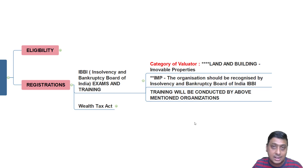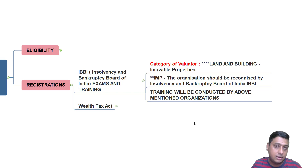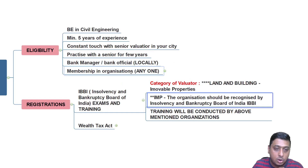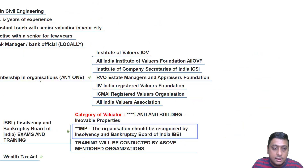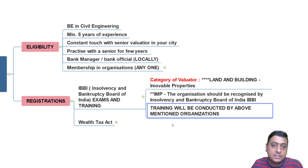There are other immovable properties like agricultural land, but you cannot do agricultural land valuation — there are certain other criteria you have to fulfill for that. So primarily we understand land and building valuation as a valuator. The organization should be recognized — as I told you, the membership organization should be recognized by IBBI. You can go to the link in the description to check whether it has been recognized. The training will be conducted by those organizations and the examinations will be conducted by IBBI, for which you will get all the guidance from those organizations.